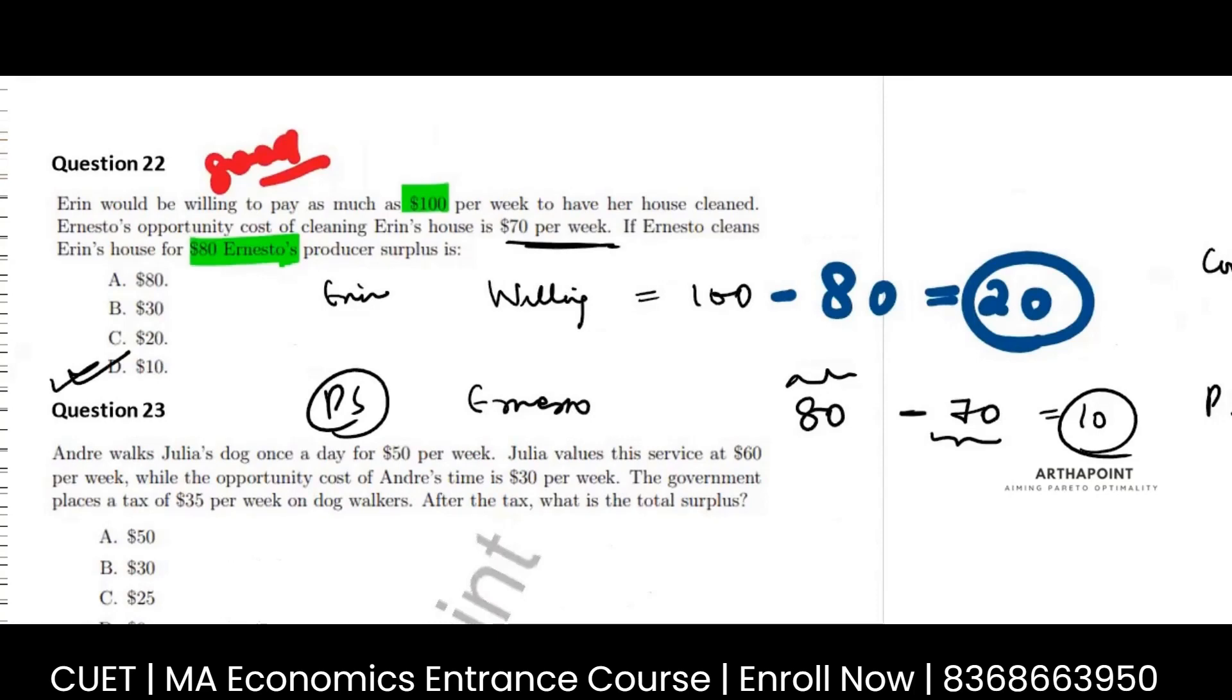Had they asked for consumer, it would have been 20. Had they asked for total, it would have been 30.